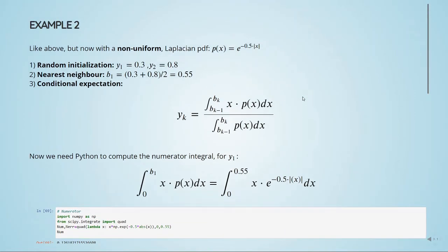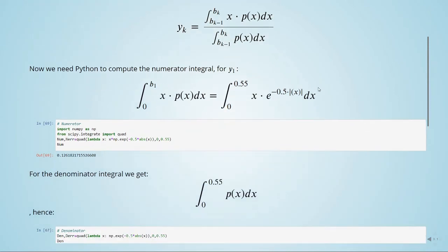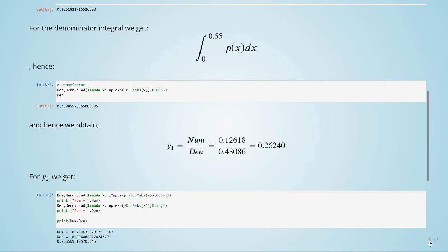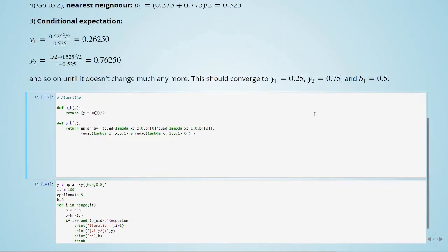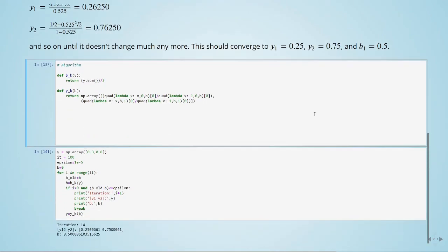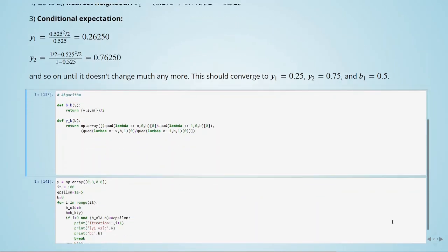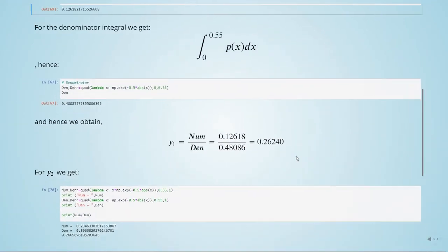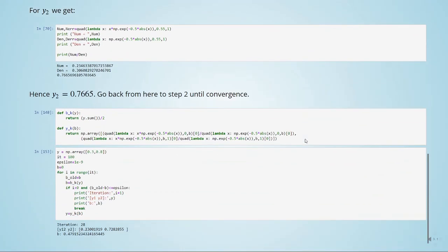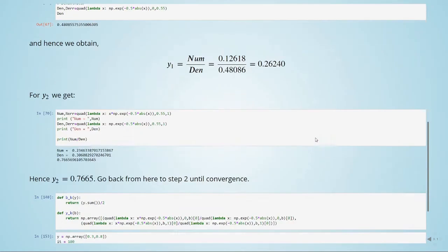For just a simple example where we had three boundaries, so we had the b0, b1, and b2 for uniform distribution and for a Laplacian distribution. And that's it for the Lloyd-Max quantizer.